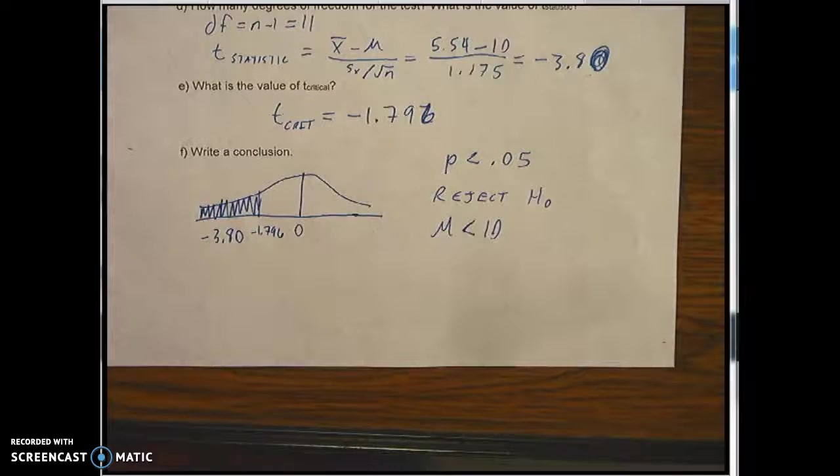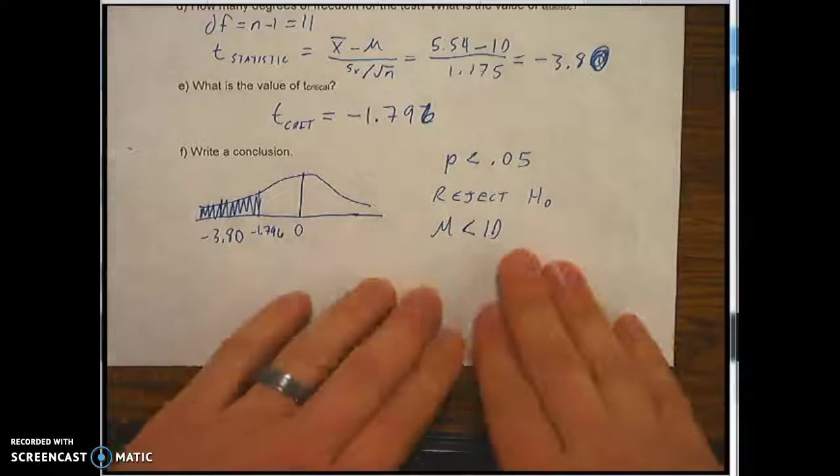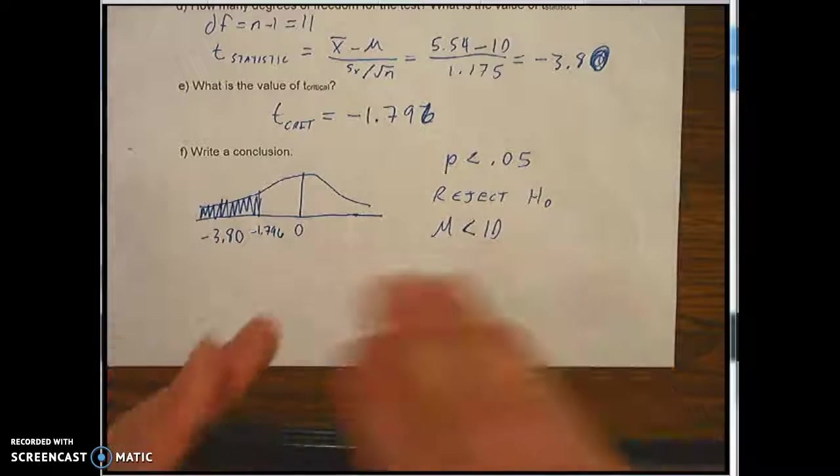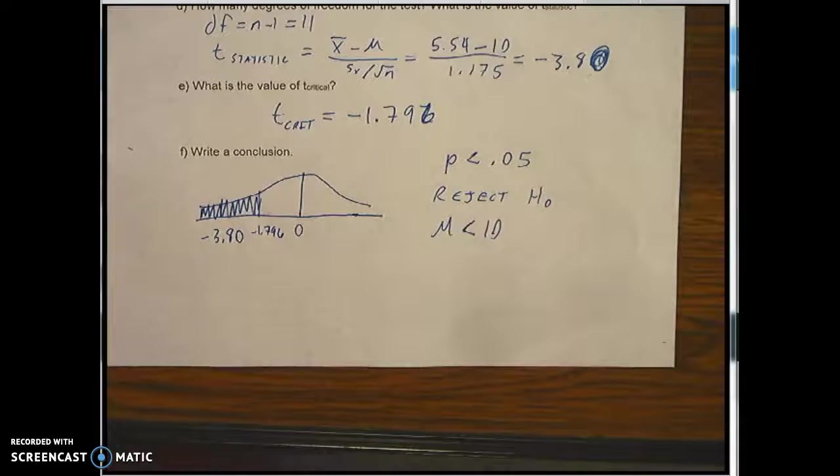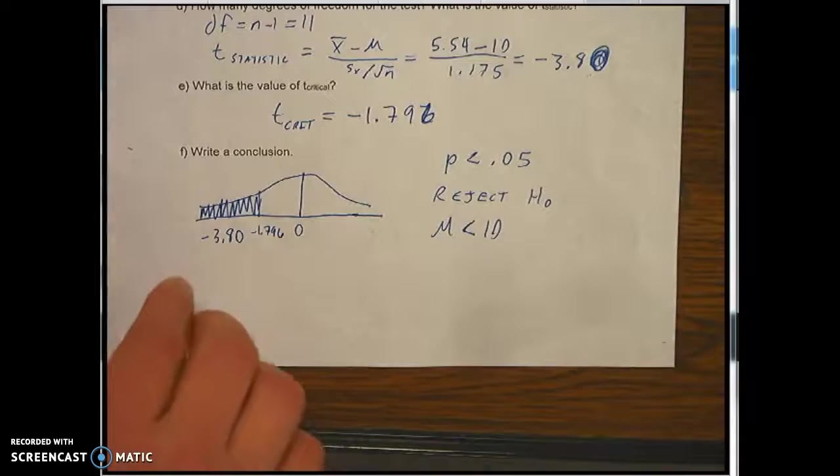Either it's normally distributed or you've got a sample size greater than 30 with no outliers. So we have to assume that in order for this to be true, that the students of Stony Point High School are normally distributed in their distance from campus.